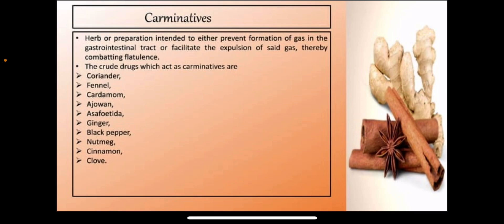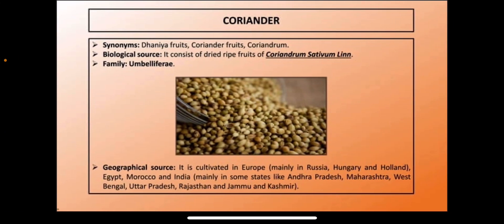So what are carminatives? Carminatives are herbs or preparations intended to either prevent formation of gas in the GIT tract, or to facilitate the expulsion of said gas, thereby combating flatulence. The crude drugs which act as carminatives are coriander, fennel, cardamom, ajwain, asafoetida, ginger, black pepper, nutmeg, cinnamon and clove — these are used to expel or prevent the formation of gas in the GIT tract.